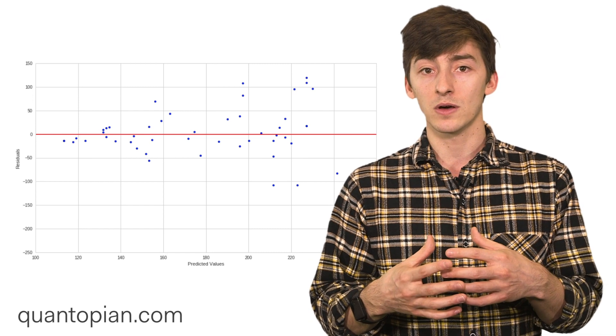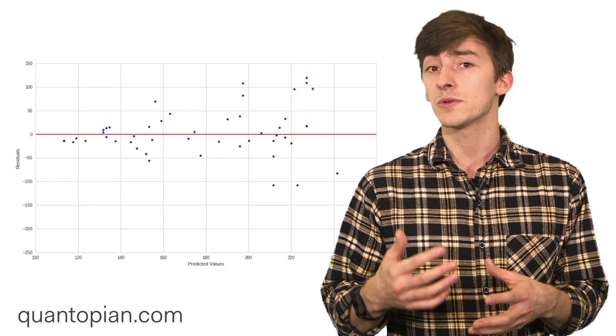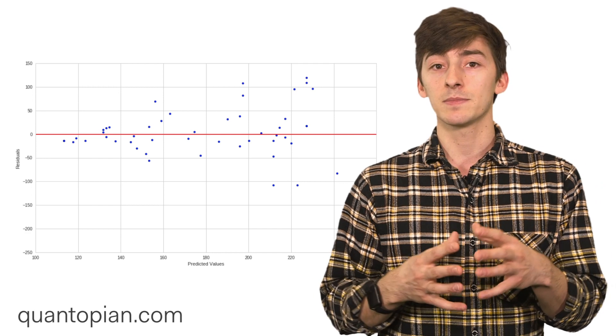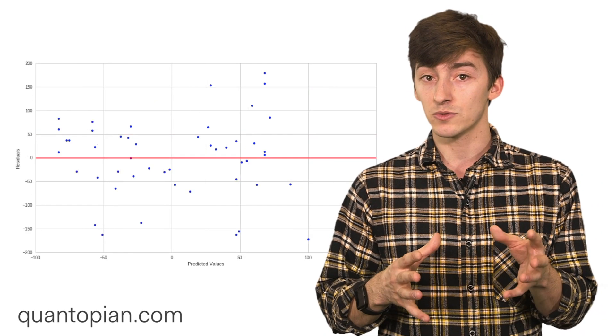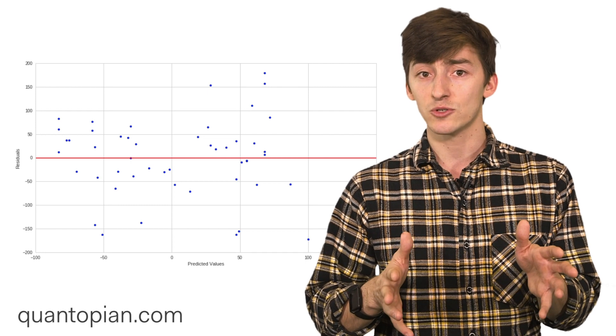This could be something along the lines of there not being a linear relationship or the presence of heteroscedasticity, which is when the variances of your model change across time, and that's something that we want to prevent. We want to make sure that the residuals are independent and identically distributed, usually just normally distributed.